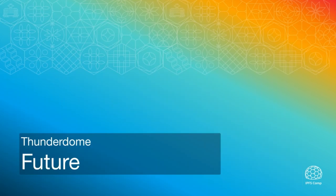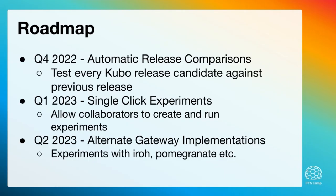For the future of Thunderdome, we have a short-term roadmap. What we're going to do is automatically test every Kubo release candidate against a previous release — we'll just set it up to be automated so we'll always have that data. That will inform the release process and hopefully help us identify performance regressions, or even better, identify performance and stability improvements. We also have work to do around making it even easier to run experiments. Currently, only the people who own the infrastructure — the Thunderdome team — can build and run experiments. What we want to do is allow collaborators to define an experiment and run it on the infrastructure independently and gather the results themselves.